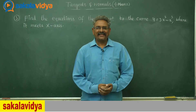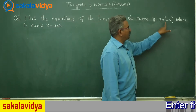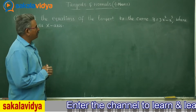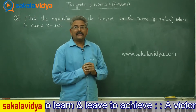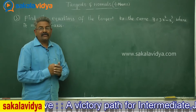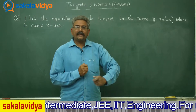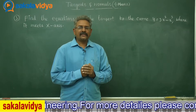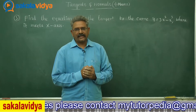Let us solve one more problem on tangents and normals. Find the equations of the tangent to the curve y equals 3x squared minus x cubed, where it meets the x-axis. So the point on the curve is not given. We need to find the equation of the tangent where the curve cuts the x-axis. Two cases may arise, giving us equations of the tangent.